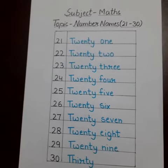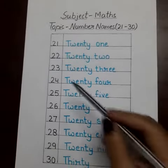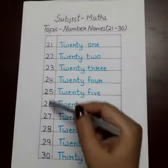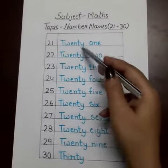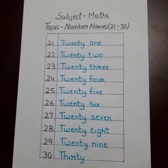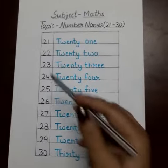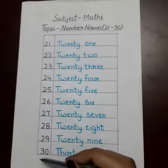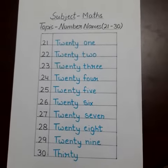Children, here you can see numbers and number names are written here — 21 to 30.